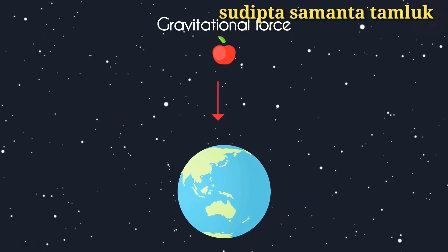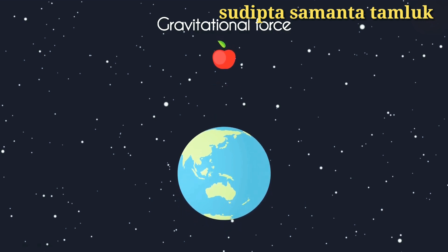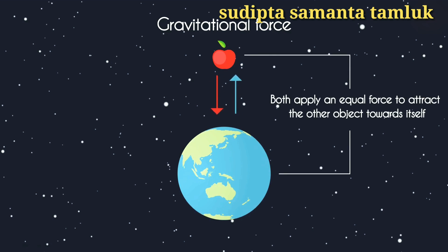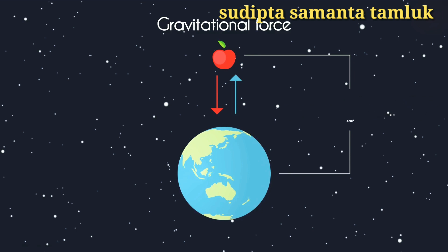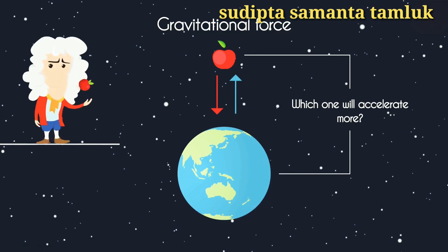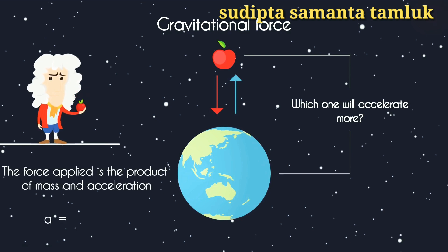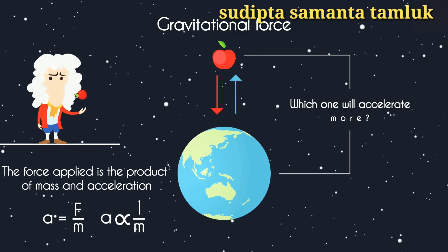So, does the apple fall towards the earth, or does the earth move towards the apple, or do both move towards each other? It is actually simple logic. Both apply an equal force to attract the other object towards itself. So if the forces are equal, which one will accelerate more? Based on Newton's second law, acceleration equals force over mass, meaning acceleration is inversely proportional to mass.